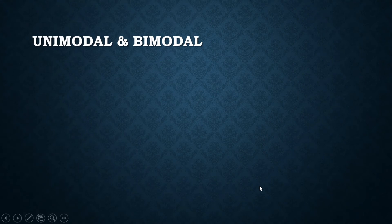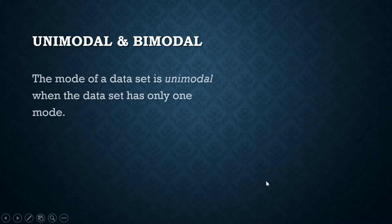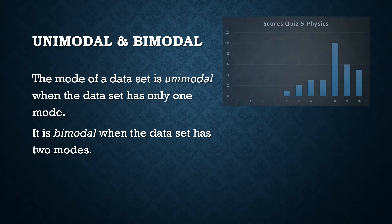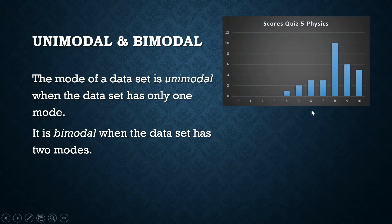The mode of a data set can be unimodal or bimodal. It is unimodal when the data set has only one mode. It is bimodal when the data set has two modes. For example, these are the results of a quiz in physics — a 10-point quiz.